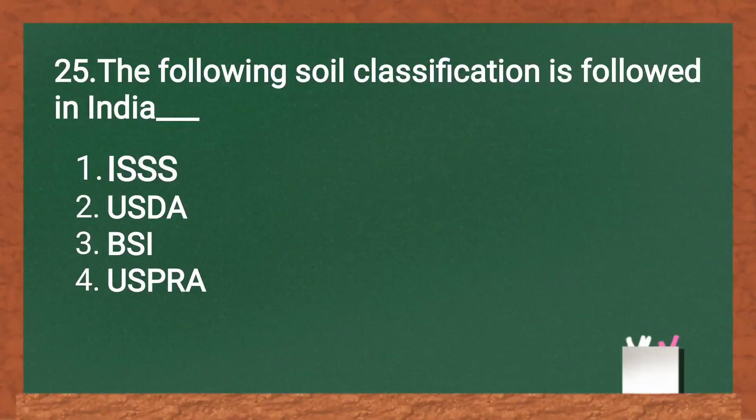The following soil classification is followed in India: ISSS, USDA, DABS, IUSPR, or A. The answer is USDA — United States Department of Agriculture soil classification (7th Approximation / Soil Taxonomy) is followed in India.